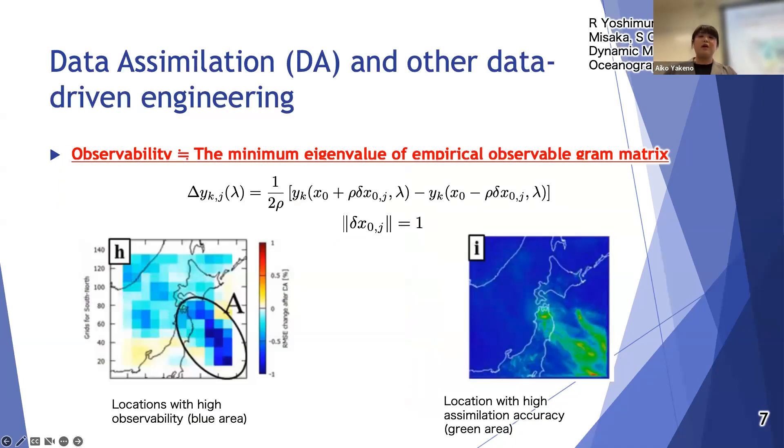I also introduce our research on application of data assimilation. This work is based on collaboration research with a company Hitachi. If we want to obtain wind energy efficiently, we have been considering to fly drones to obtain the local information and apply data assimilation to the atmospheric forecasting simulation. To find the optimal location for data assimilation we consider observability.